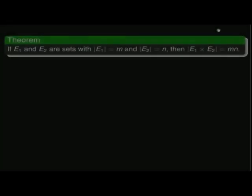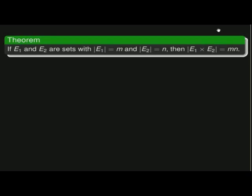Let's start off with a theorem that counts the Cartesian product of two finite sets. Suppose we've got sets E1 and E2, and the cardinality of E1 is going to be M and the cardinality of E2 is going to be N. Then the cardinality of the Cartesian product of E1 and E2 is M times N.